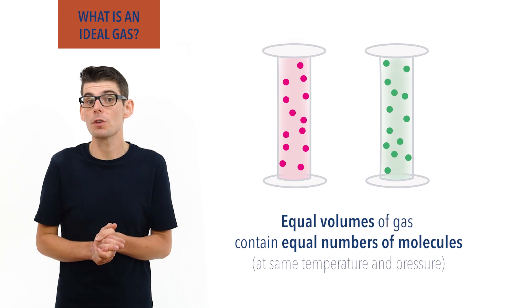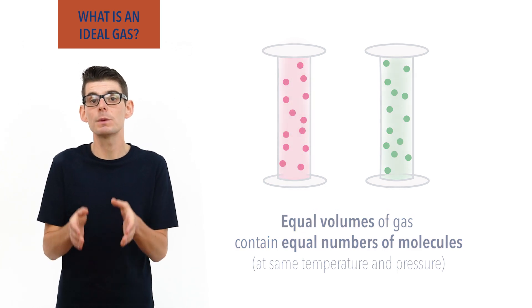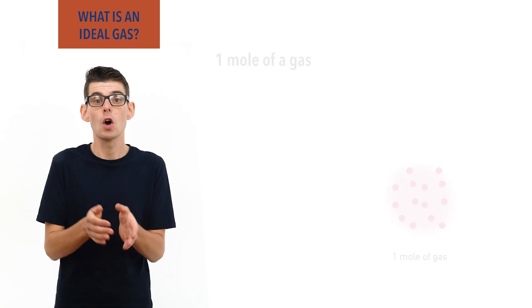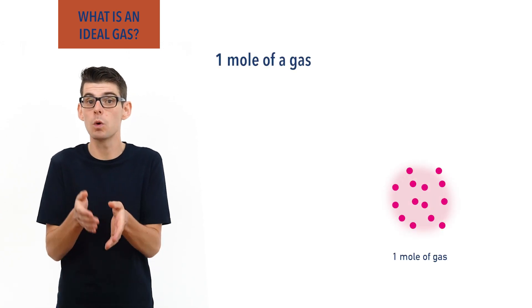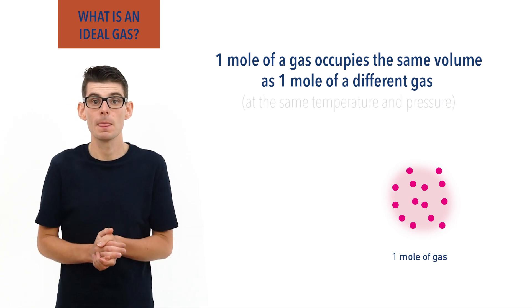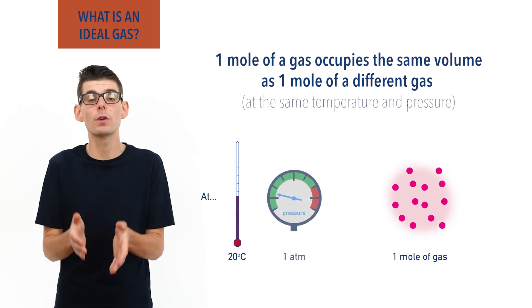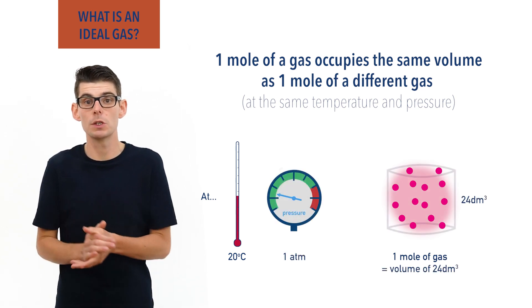Today we know that Avogadro's proposal about gases is pretty much spot-on, and we say that one mole of any gas occupies the same volume as one mole of another gas at the same temperature and pressure. At room temperature, 20 degrees Celsius, and one atmosphere of pressure, this volume is 24 decimeters cubed.